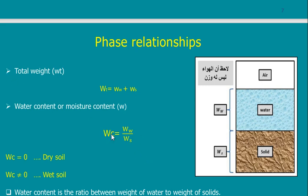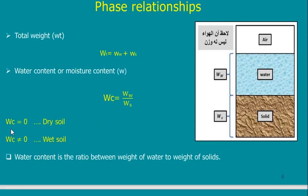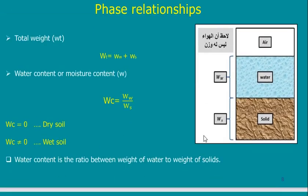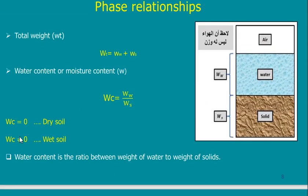If I tell you what is the water content or moisture content of the sample, we have a definition for moisture content: it is the weight of water compared to the weight of solid — Ww divided by Ws. If I tell you the water content is zero, it means I have dry soil. If the water content is not equal to zero, then it is the normal three-phase case.